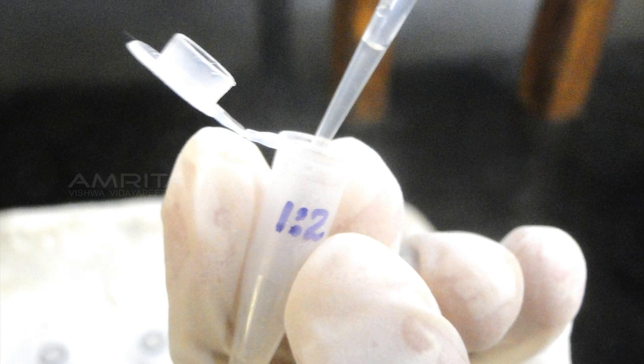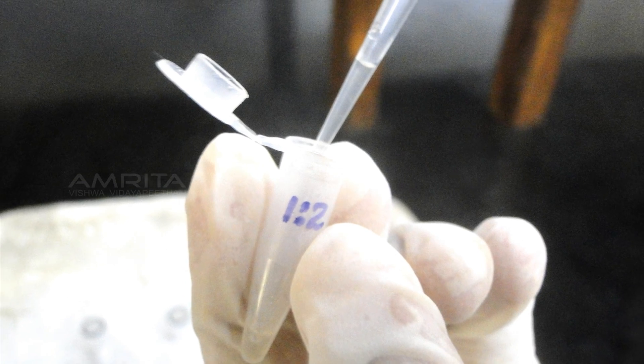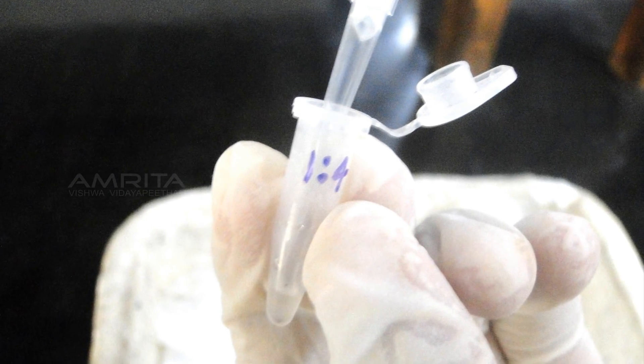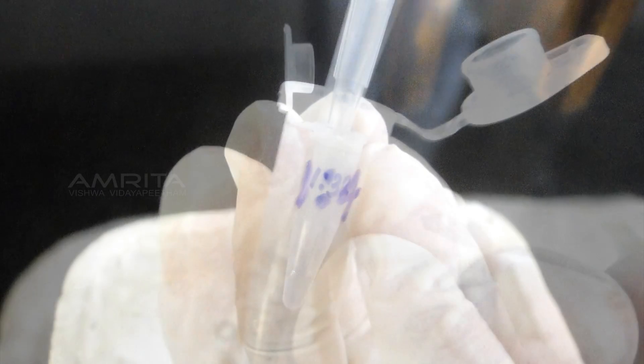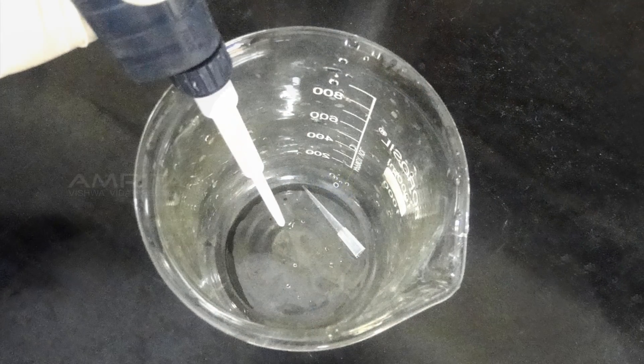Transfer 20 μL of 1:2 diluted antiserum from the first vial into the second vial. The dilution in this vial is 1:4. Repeat the dilutions up to the fifth vial, changing the tip each time.